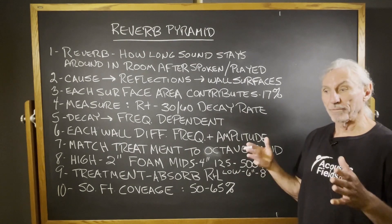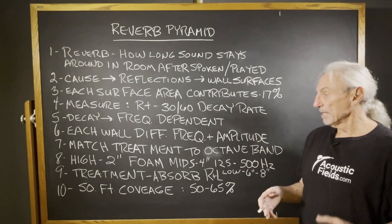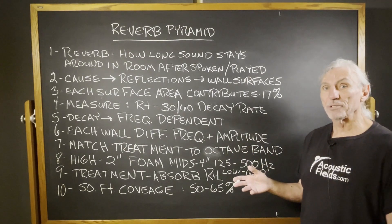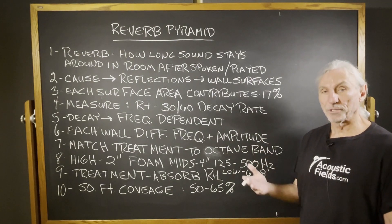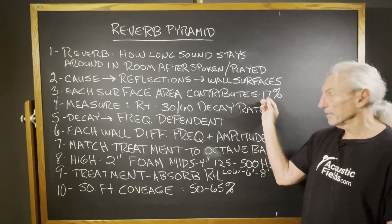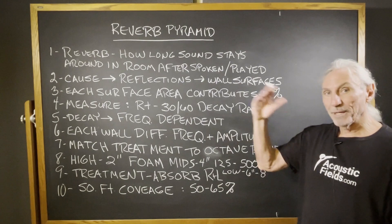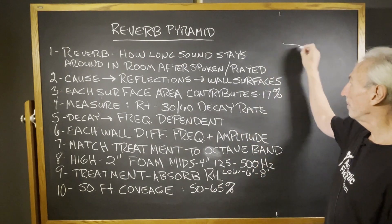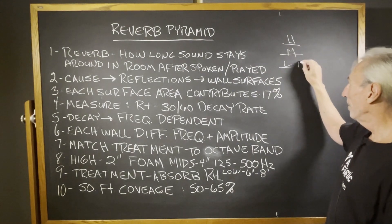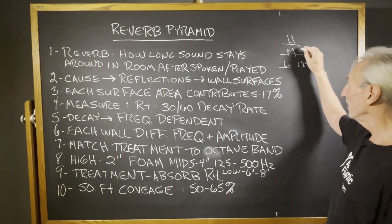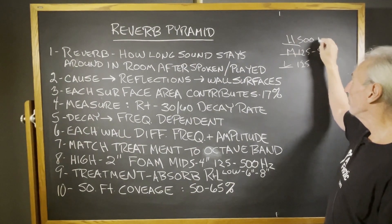A lot of churches today have bands up front and a lot of people in the congregation, so there are going to be different energy levels all the way around. You have to match those problems — the energy levels producing issues at those surface areas — with the right rate and level of treatment. We break this active band into highs, mids, and lowers. Low starts at 125 Hz, mids are 125 to 500 Hz, and highs are anything above 500 Hz.